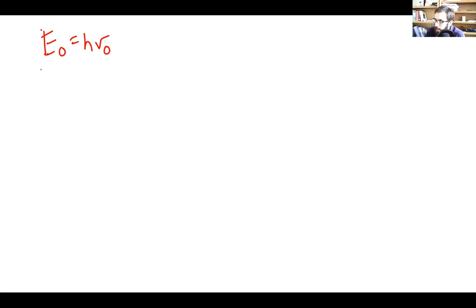Okay, and what are we given? We're given energy. So we're given E and we're told that that's 3.43 times 10 to the minus 19 joules.